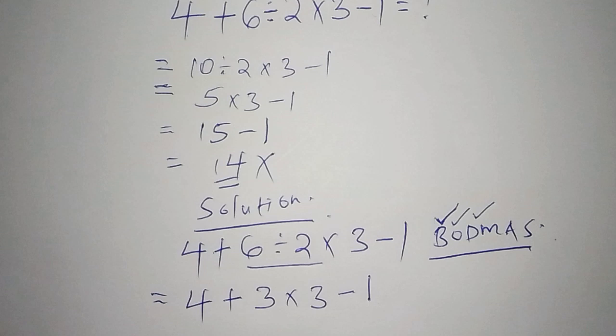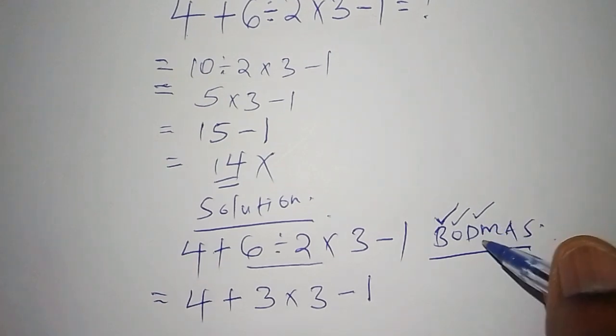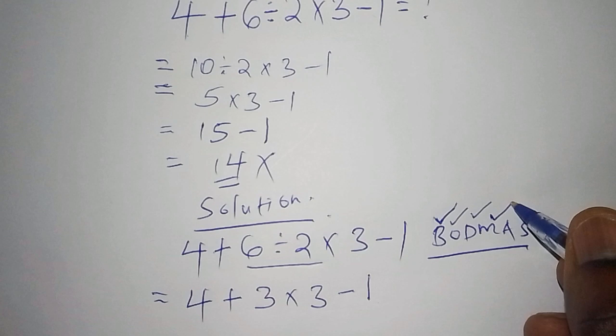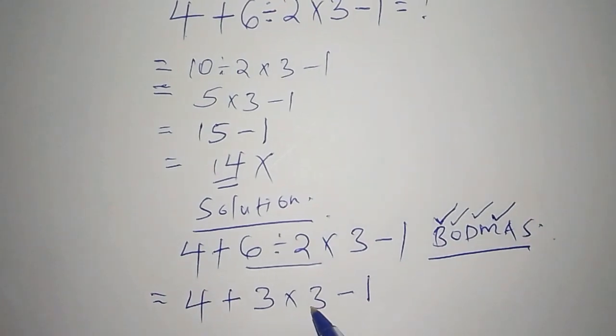So once we have that then we move now to the second step where we check our operation and the operation that we shall now be dealing with is multiplication. So we need to multiply 3 by 3.